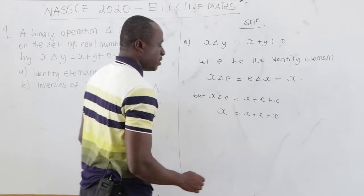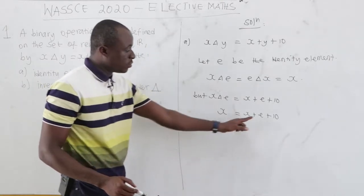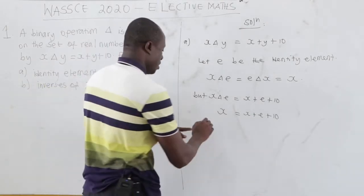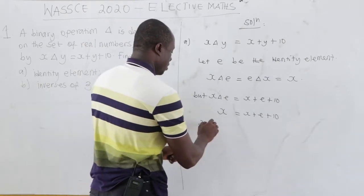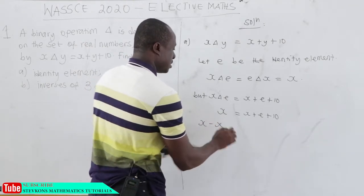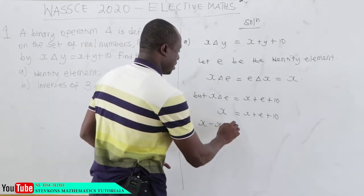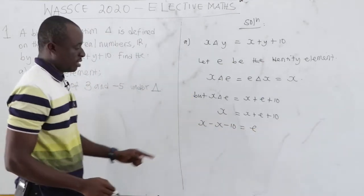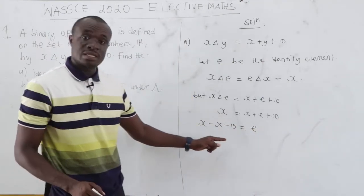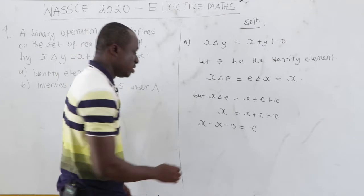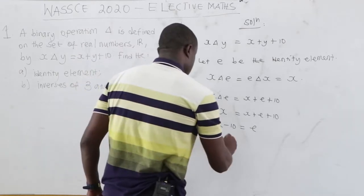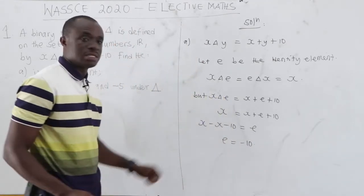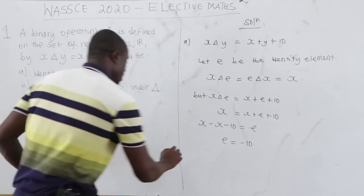Now from here, we want to find the identity element — we want to find e, so we make e the subject. We have x minus x minus 10 equal to e. x minus x is 0, so we have e equal to negative 10. So e equals negative 10; that is the identity element.